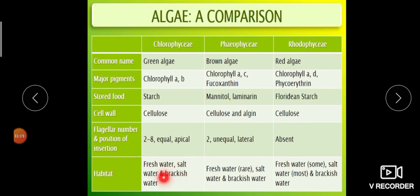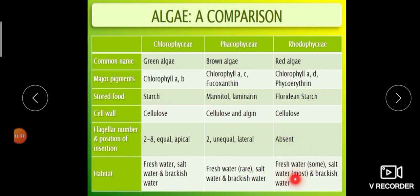Habitat: Chlorophyceae can be seen in freshwater, salt water, and brackish water. For Phaeophyceae, freshwater brown algae are rare — they are mostly seen in salt water and brackish water. For Rhodophyceae, some freshwater red algae exist but most are salt water or brackish water. So these are the details about algae.